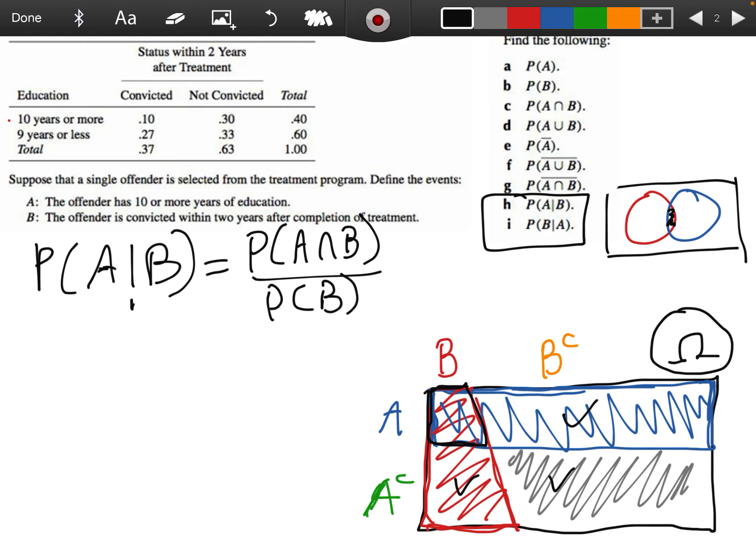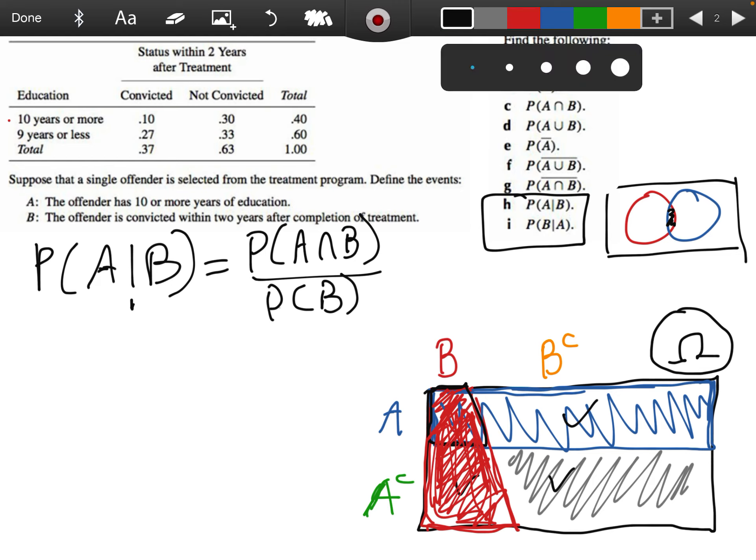Why? Because in the Venn diagram, what we're saying is, suppose we already know that B is the case. Suppose we know that we're talking about someone who's from this. Then, given that B, what's the probability that A is true? Well, it's saying, once we already know we're in the B area, what's the probability that we're furthermore in the A area? So we're looking at the probability of A intersect B, that upper left, divided by the entirety of B.